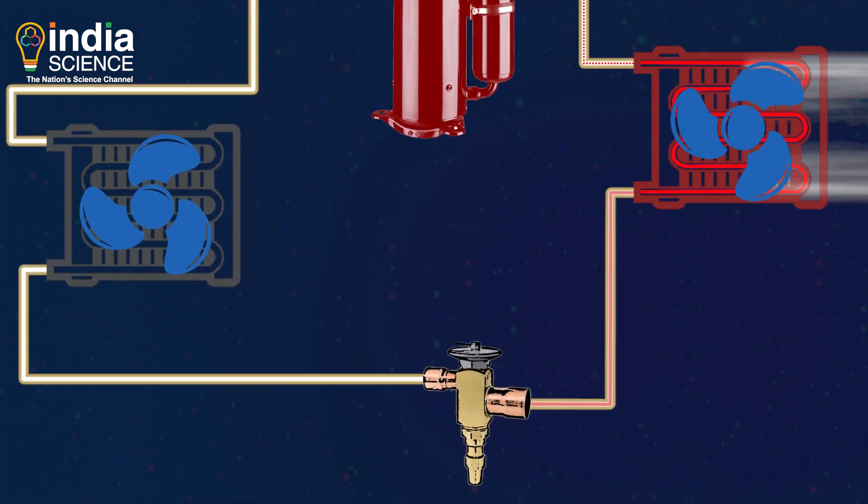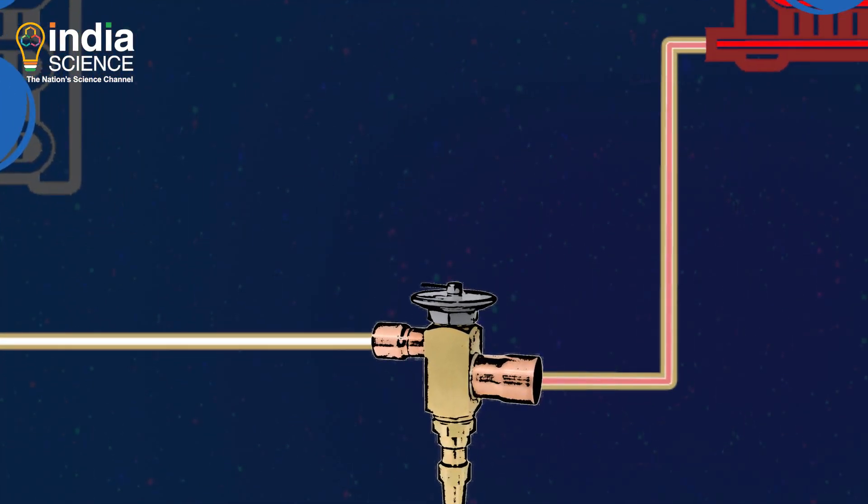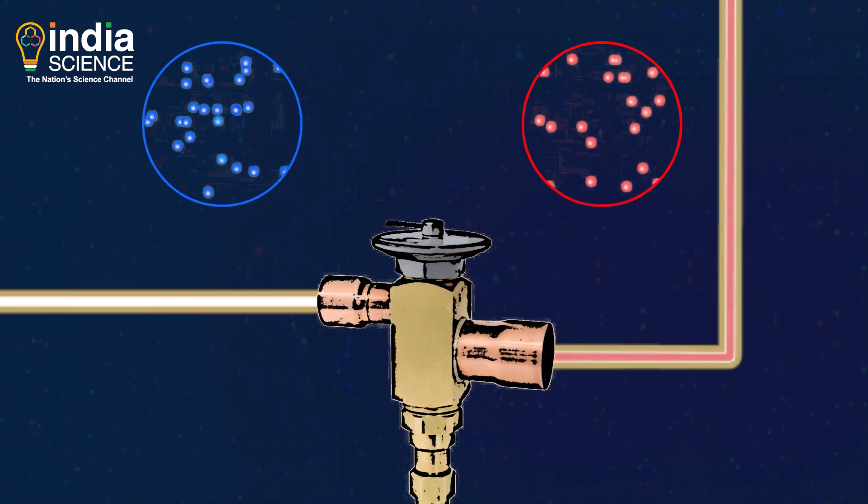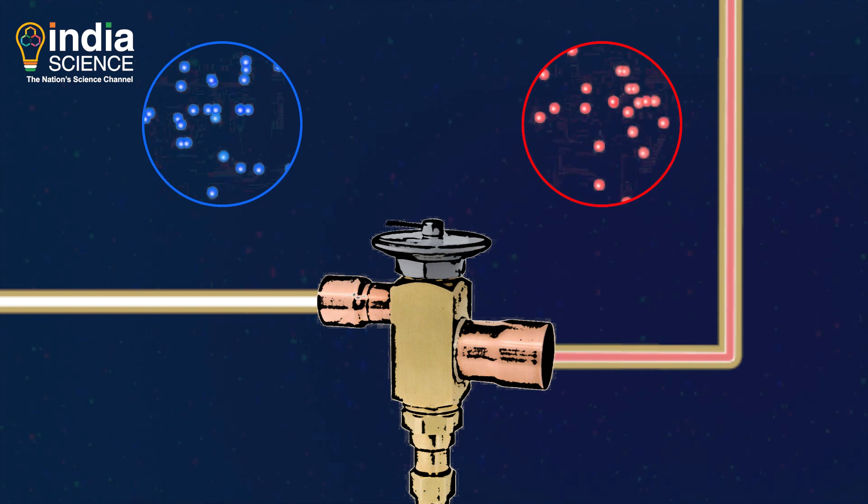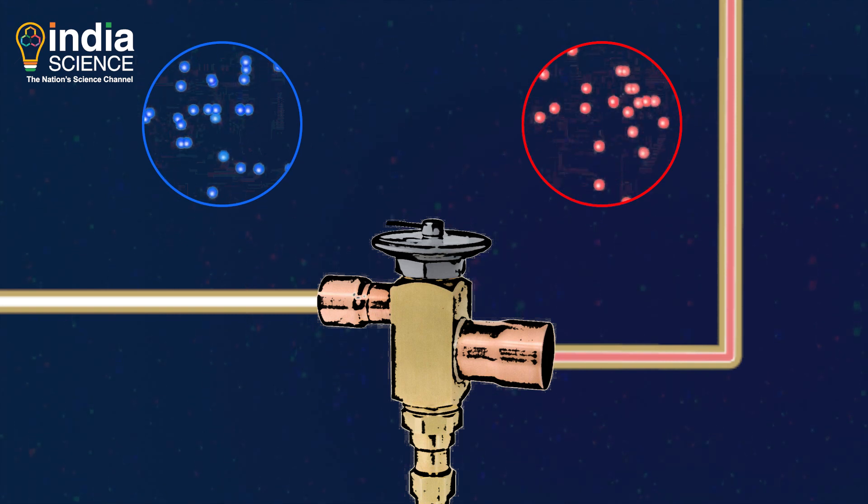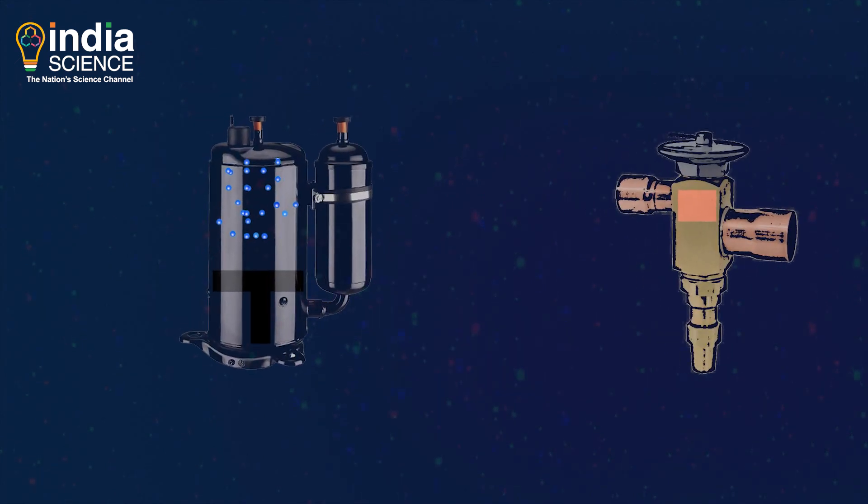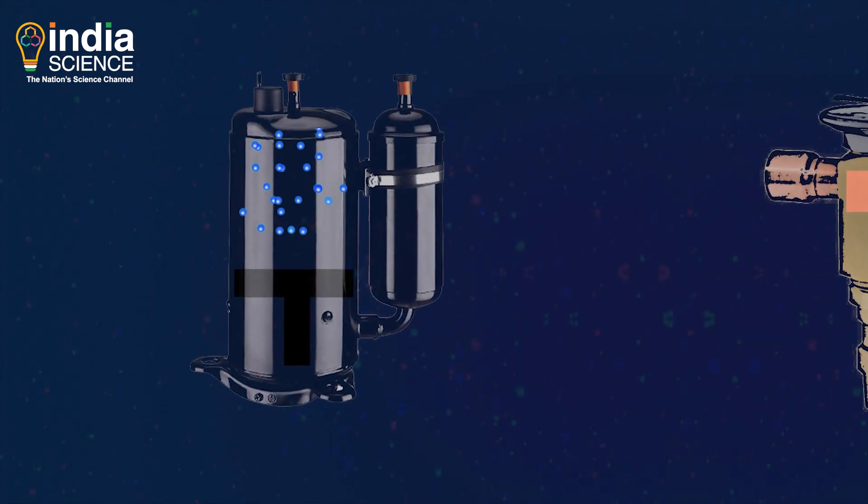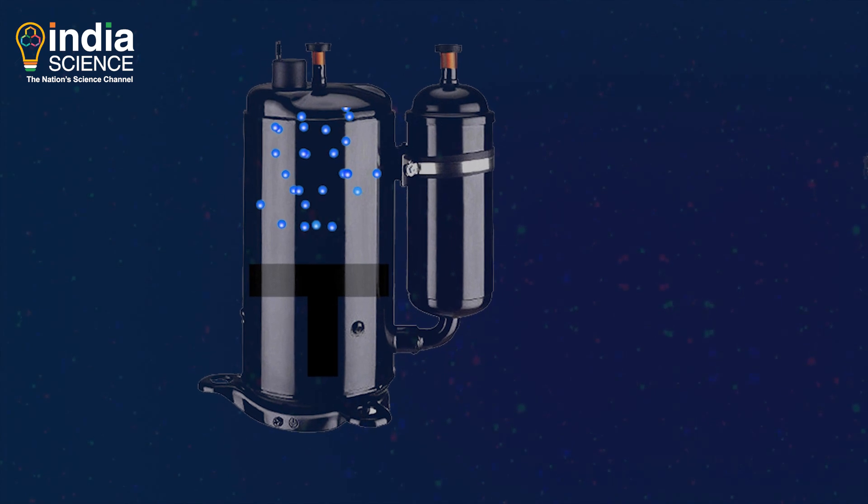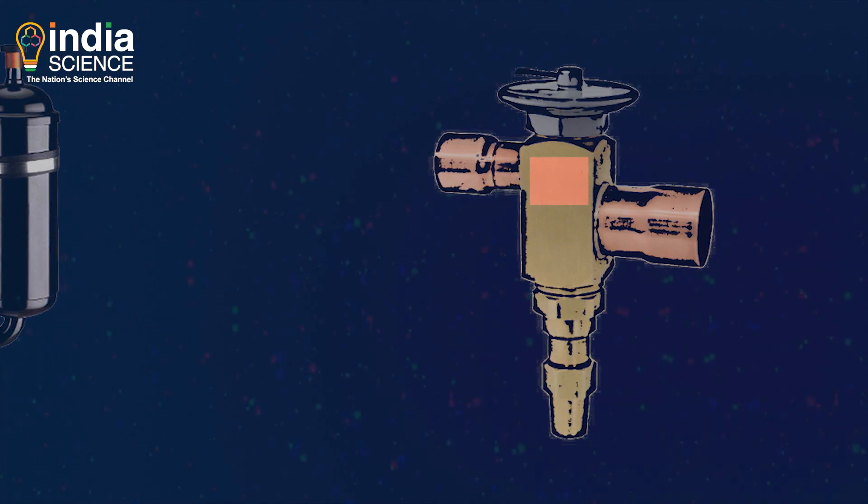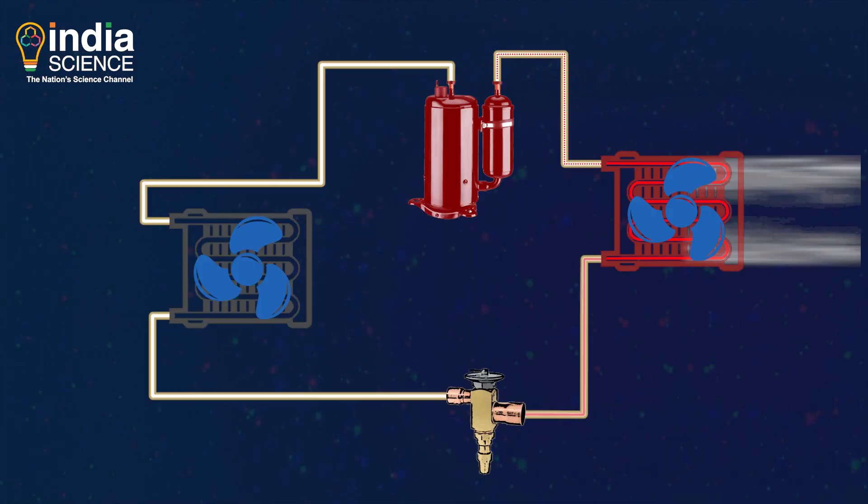The liquid refrigerant then leaves the condenser coil and reaches the expansion valve. The liquid refrigerant has given away its heat, but it is still too hot. The expansion valve expands the refrigerant liquid and cools it down. The expansion is opposite to compression. As the compressor squeezed the gas and raised its temperature, the expansion valve decompresses the liquid and reduces its temperature.